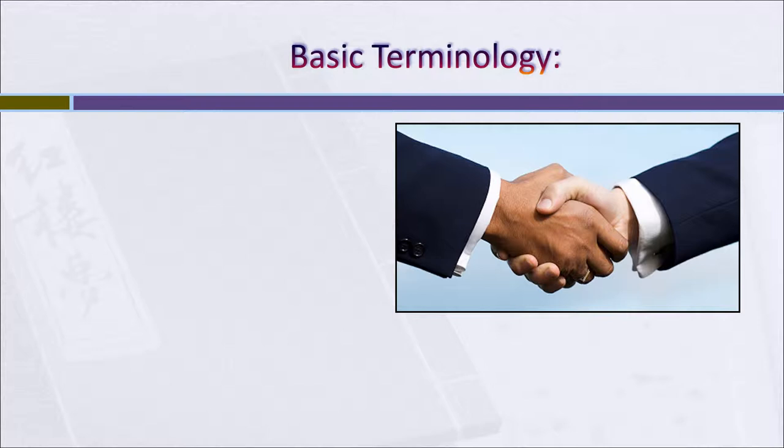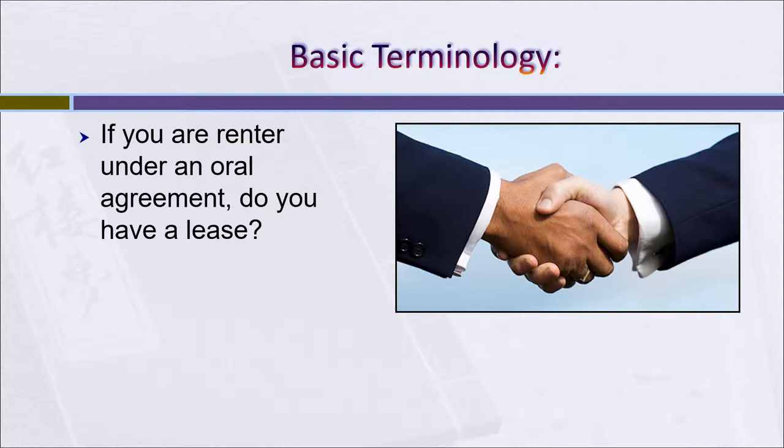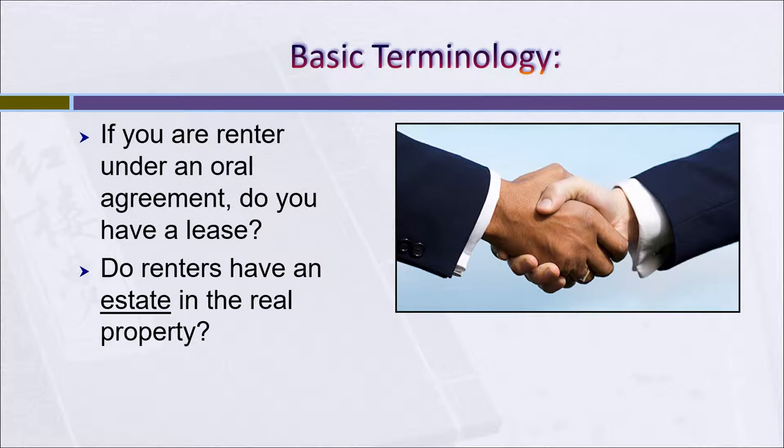We'll begin with a little basic terminology. Many people might say, I don't have a lease — I just have an oral agreement or a handshake with my landlord. But in fact, if you are a renter, even under an oral agreement, you do indeed have a lease. It's simply an oral lease if it hasn't been committed to writing. You also have an estate in the real property. And in a minute, we'll talk about the terminology used to describe the different estates that a tenant can hold.